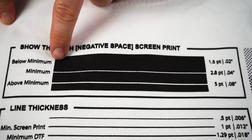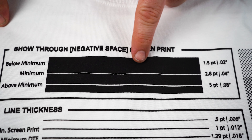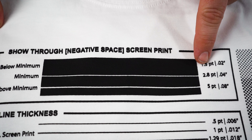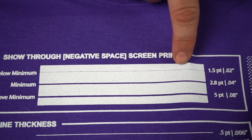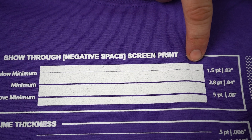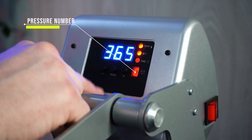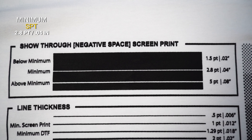For our minimum show-through line weight up here at the top of our graphic, you'll notice that we really can't see the break in the solid area at 1.5 point, which is underneath the minimum. Here on our white version, you can barely see it still, but it almost closed up. Now with increased pressure on press, if you don't have a Hotronix press with that exact number, it may cause the inks to spread a little bit more on your heat press, and that's going to cause it to completely fill in. That's why there's a clear set standard of 2.8 points where it's never going to fill in.